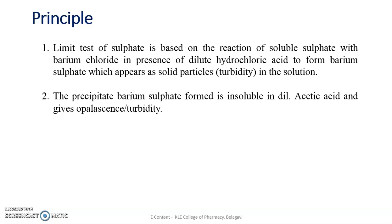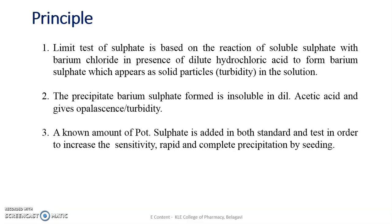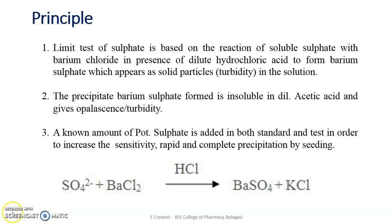Instead of acetic acid, dilute HCl is also commonly used. A known amount of potassium sulphate is added to both the standard and the test. The reason for the addition of potassium sulphate is that it acts as a seeding agent — if potassium sulphate is present, it helps in the formation of barium sulphate. In the reaction, the sulphate ion reacts with barium chloride in the presence of HCl, forming BaSO₄, which shows turbidity.